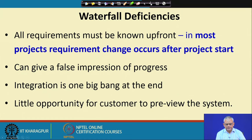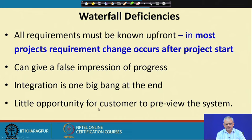Another problem is that the customer is kept out of the development. The customer defines the problem and then just waits for the software to be developed. Once the customer gets the software and uses it, they say this is not what they wanted and need many changes. One of the key problems in the waterfall model is that once the software is complete, it rarely meets the customer's requirements, because the customer is kept out of the development work.